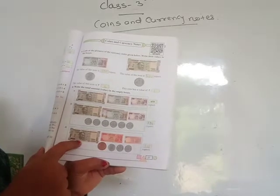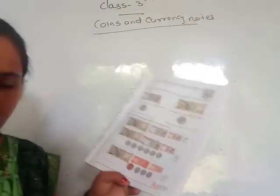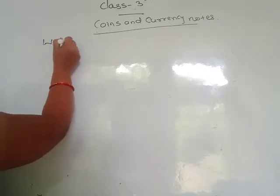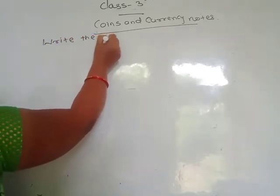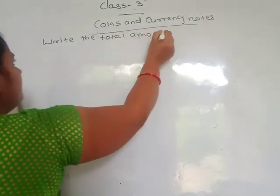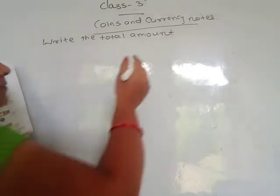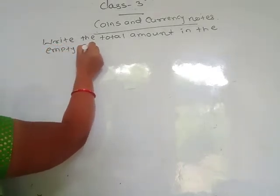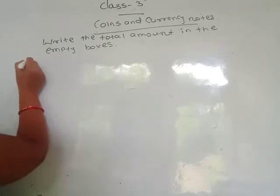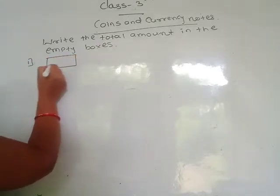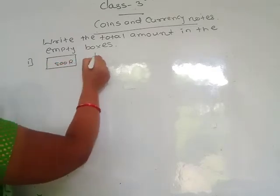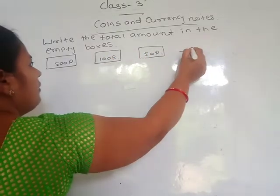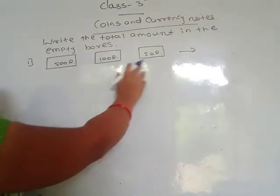Here the answer is 539 rupees. Write the total amount in the empty boxes. First one: one 500 rupees note, then one 100 rupees note, then one 50 rupees note. Total amount is 500 plus 100 is 600, plus 50 is 650 rupees.